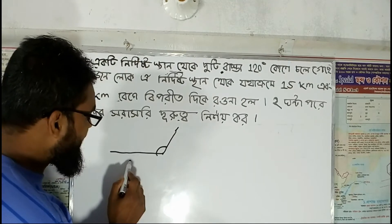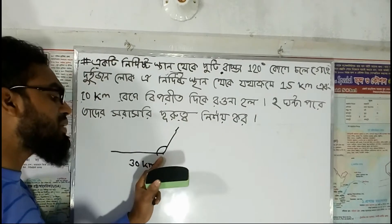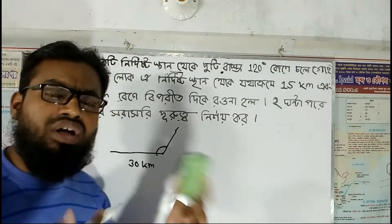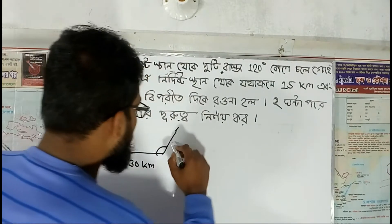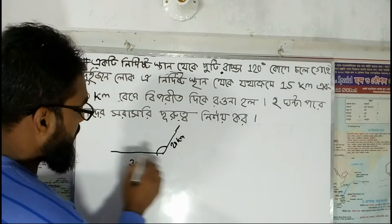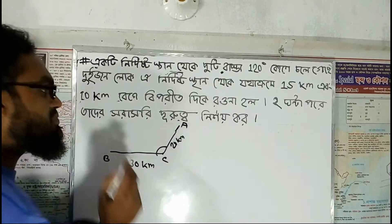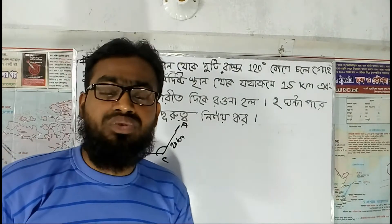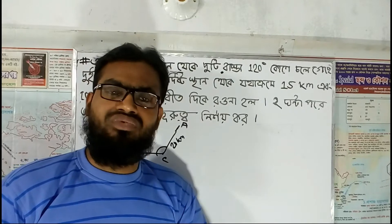That means we are telling here that there is a 30 km distance between A and B, a 20 km distance, and a 10 km distance between them. That means it is a 20 km distance between A and B. So we can write here 20 km. The demand of this question is to find the distance between A and B.